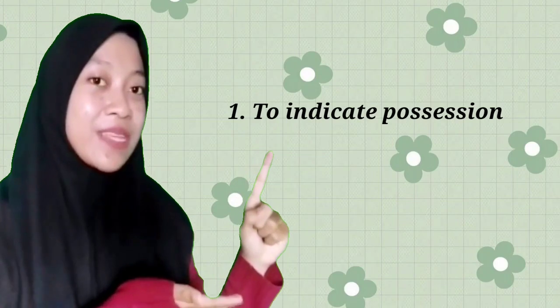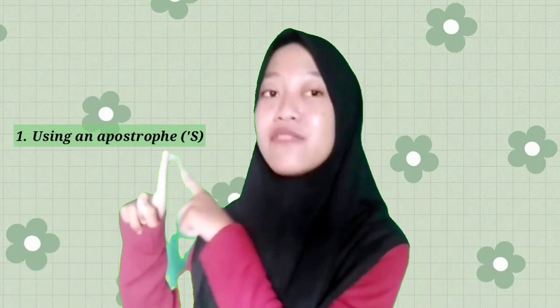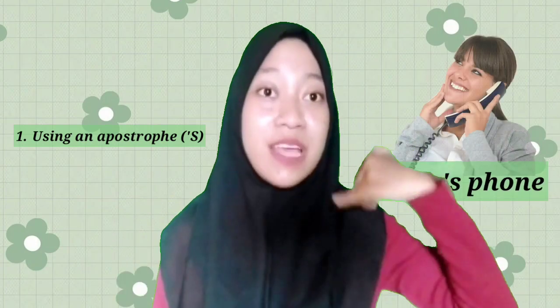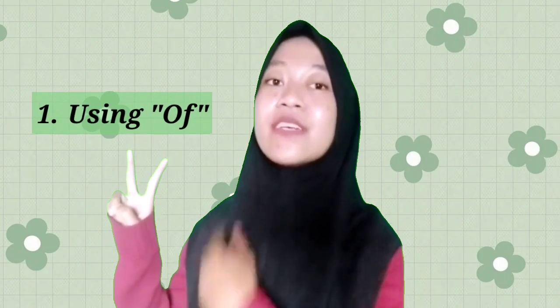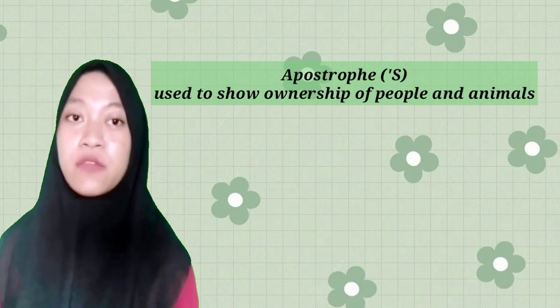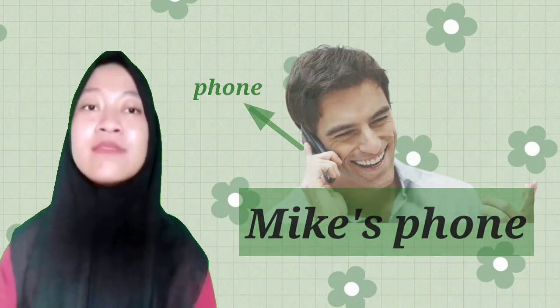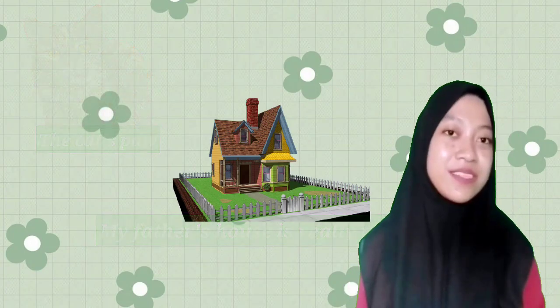The first use is that preposition 'of' is used to indicate possession — to declare ownership. We can use the following two things: the first is using an apostrophe, for example 'Jenny's phone.' The second is using 'of,' for example 'the leg of the chair.' Both are equally correct, but there is a difference. The apostrophe is used to show the ownership of people and animals — for example, 'Mike's phone,' which belongs to a living object or human.